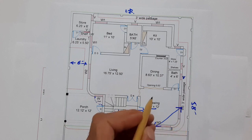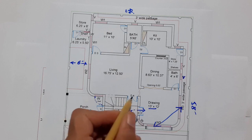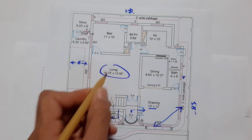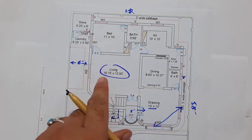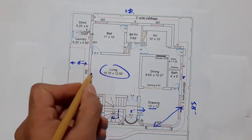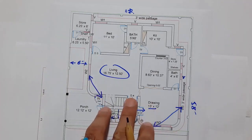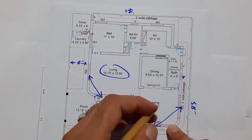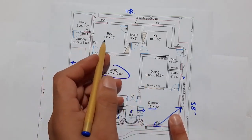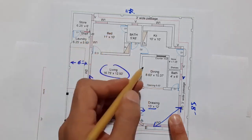In the drawing room there is also an opening for the dining. There is a small door from the living room. The living room size is 16 feet 9 inches by 12.5 feet. There are windows here as well with cross ventilation, which is very important in house planning. The bedroom size is 11 feet by 10 feet.